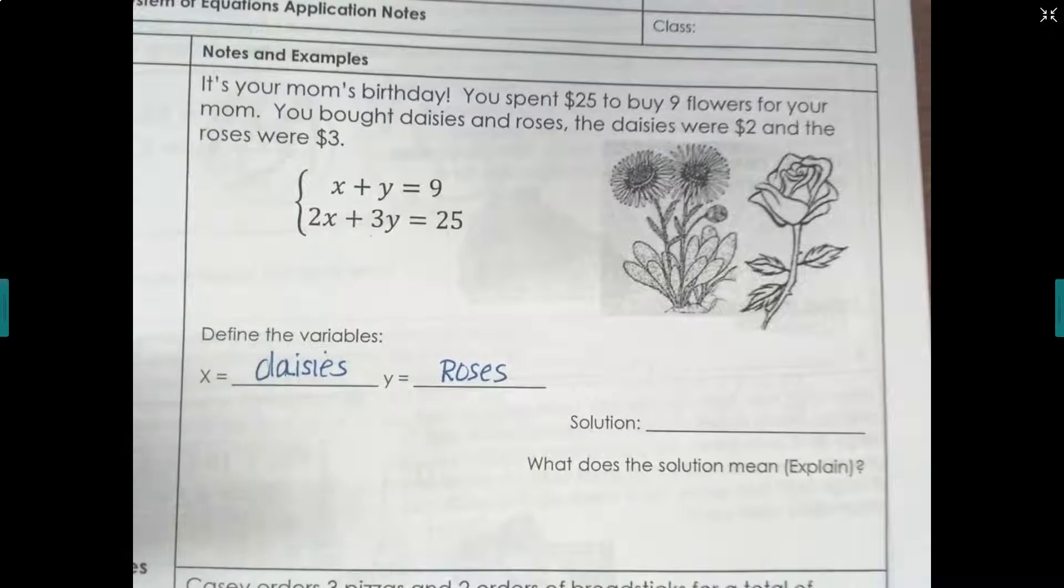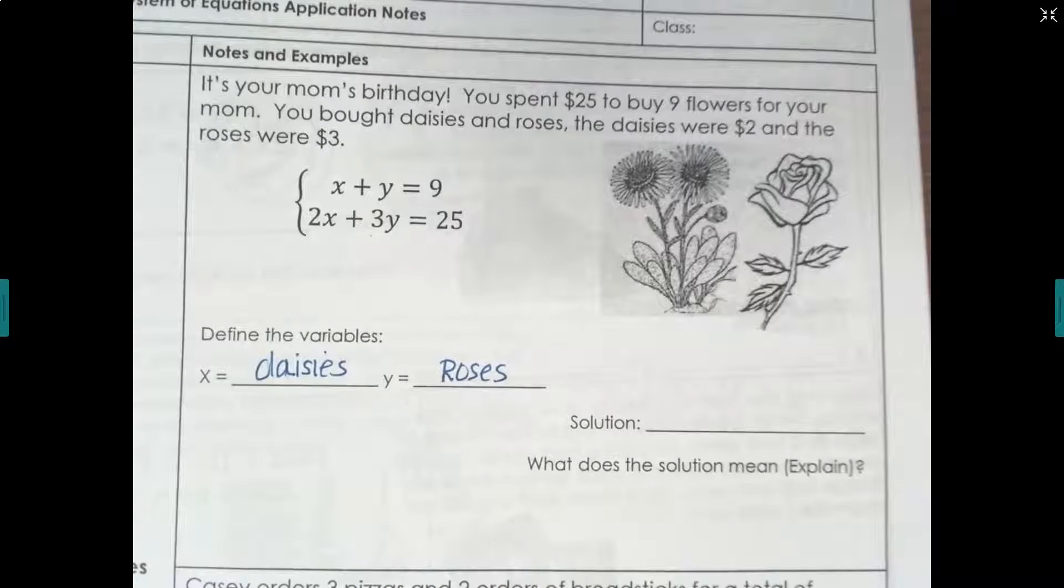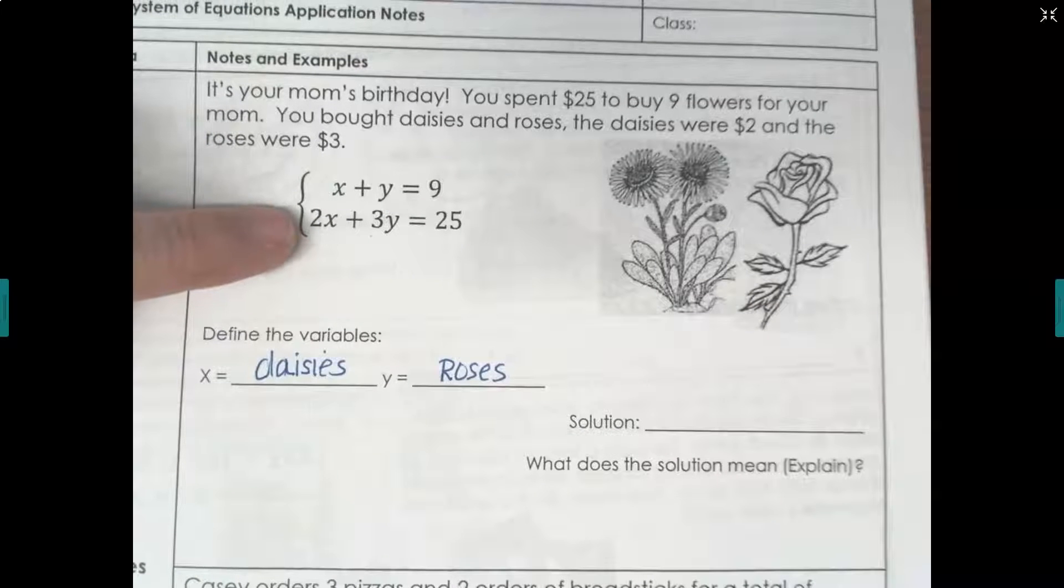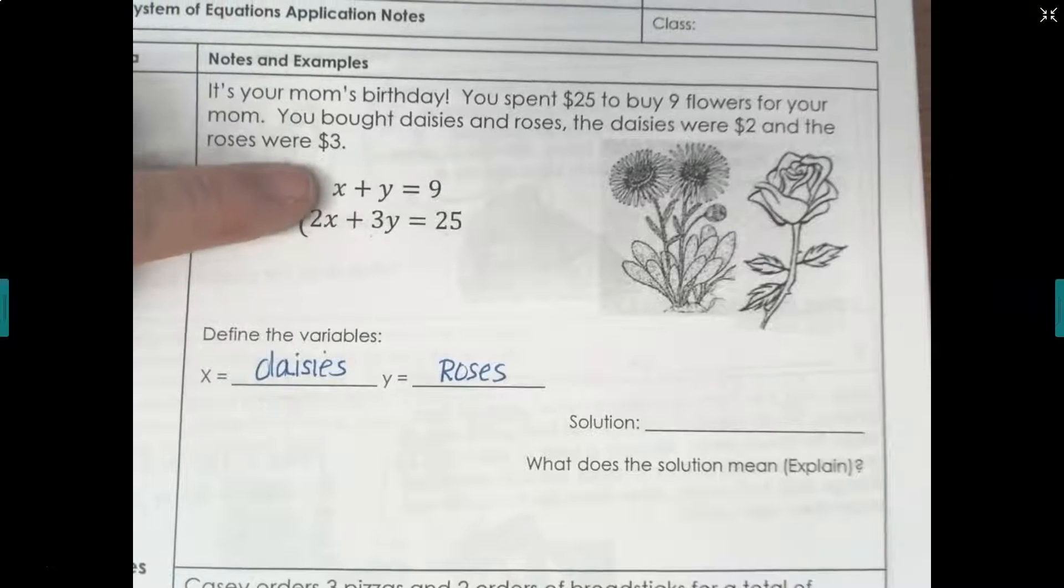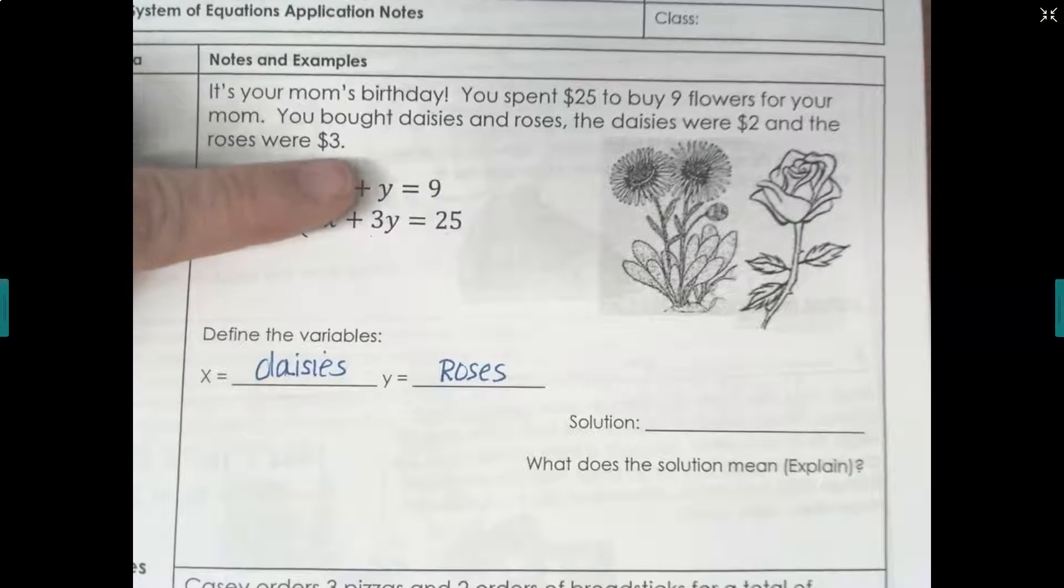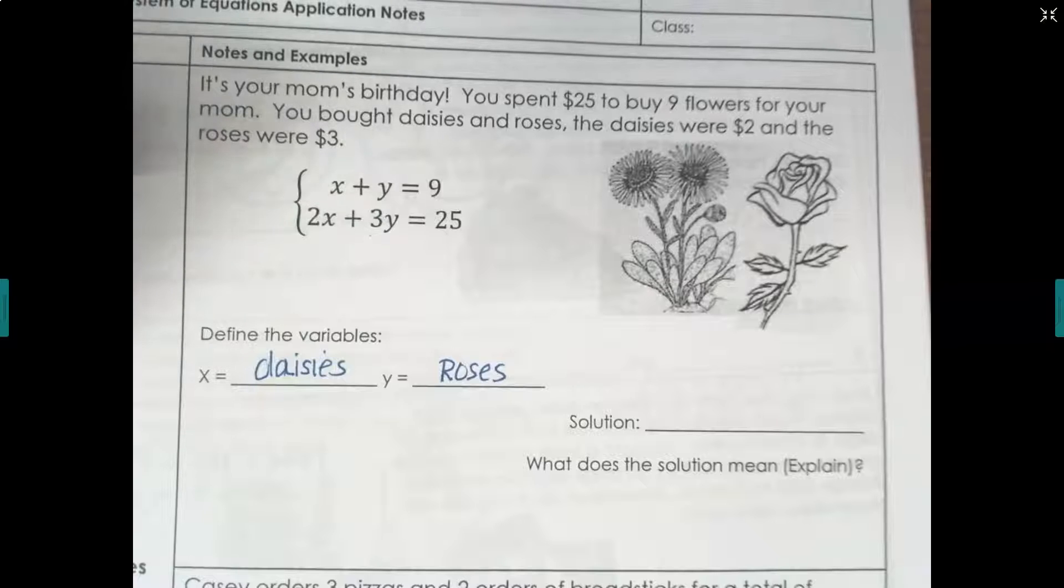That way when you solve this in the end, you know what the answer means. So that kind of helps us with this equation. $2 times the number of daisies plus $3 times the number of roses equals $25. This shows daisies plus roses equals nine flowers. That's what the second equation shows us. So let's go ahead and pull up Desmos like we did previously.